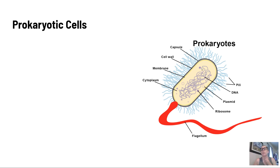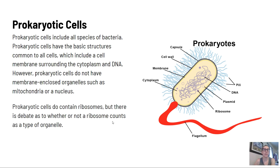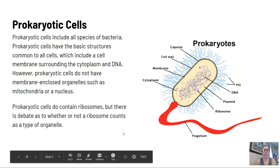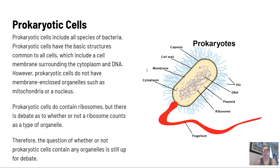Prokaryotic cells include all species of bacteria. They have the basic structures common to all cells, which include a cell membrane surrounding the cytoplasm and DNA. However, prokaryotic cells do not have membrane-enclosed organelles such as mitochondria or a nucleus. There is also a debate as to whether or not ribosomes count as a type of organelle, so the question of whether prokaryotic cells contain organelles is still up for debate in science.